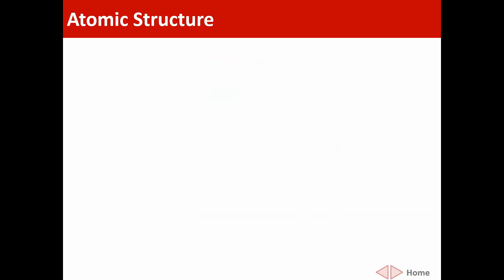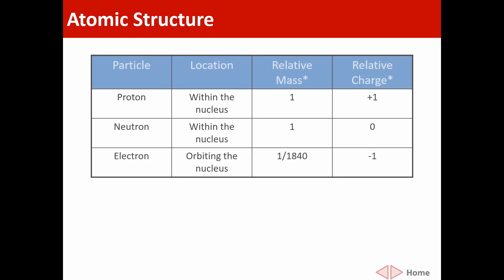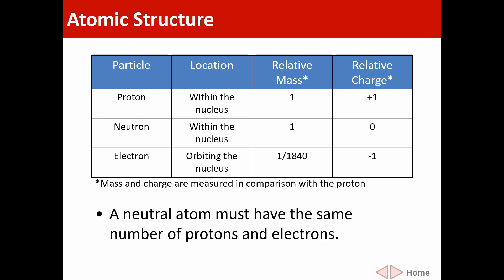Last time we looked at atomic structure, we looked at evidence for the nucleus with Rutherford's alpha scattering experiment. We saw that inside the atom we have three main particles: the proton, the neutron, and the electron. We saw their locations, relative masses, and relative charges. We finished by saying that a neutral atom has the same number of protons and electrons, because protons are positively charged, neutrons are neutrally charged, and electrons are negatively charged, so they cancel out.